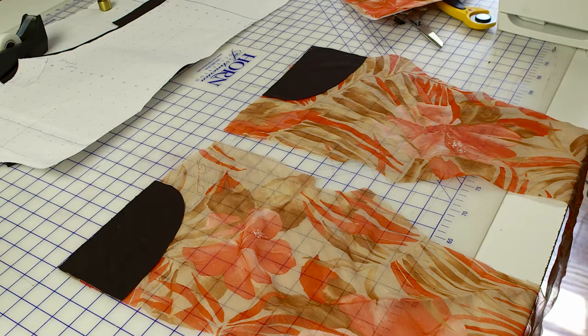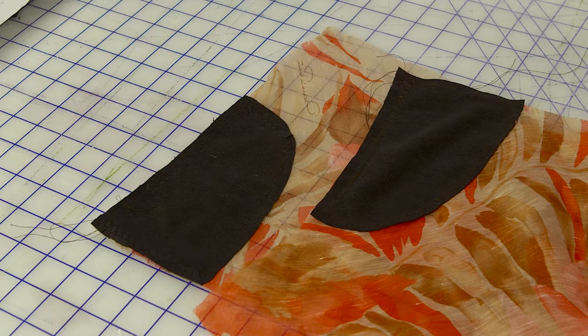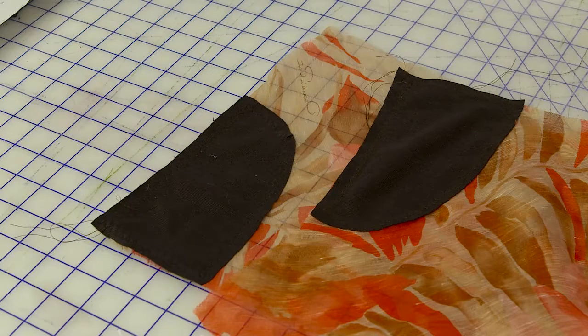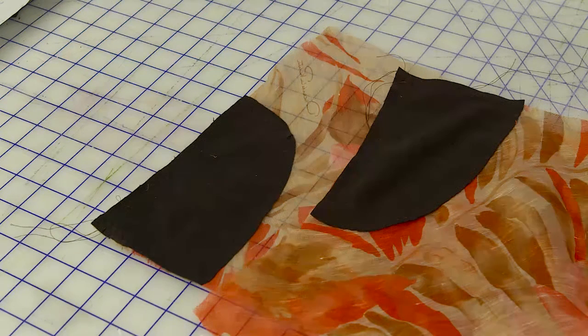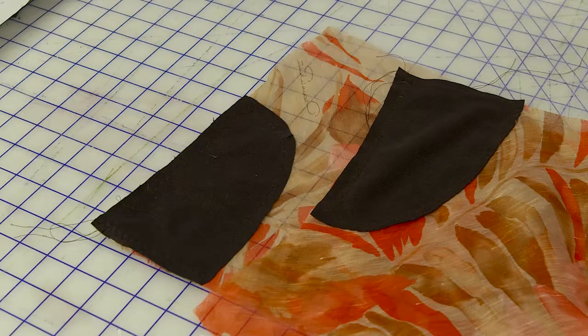Here you can see I've sewn the ponti knit little facing pieces to protect the view from the front pocket opening onto the silk, and I just want to show you that I did one just pinning it and then I did the other one using 505 adhesive spray.